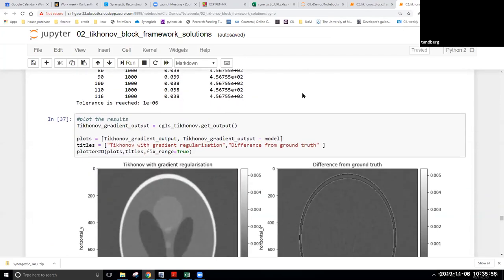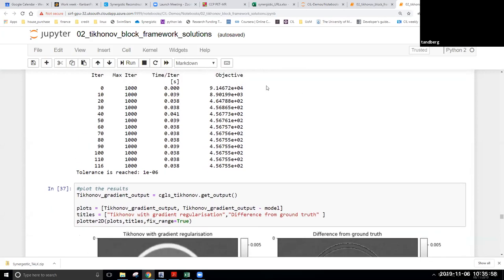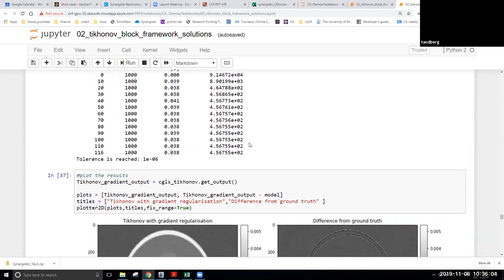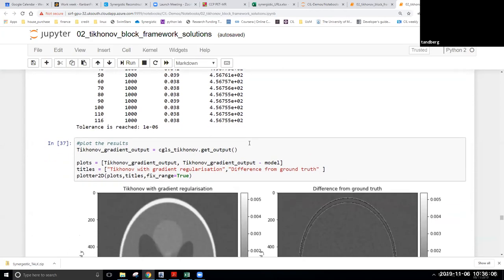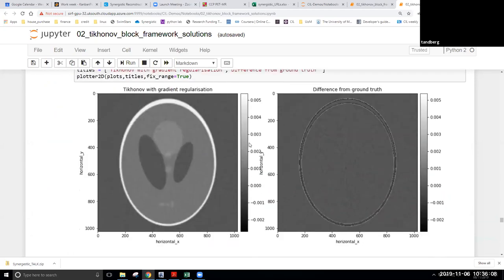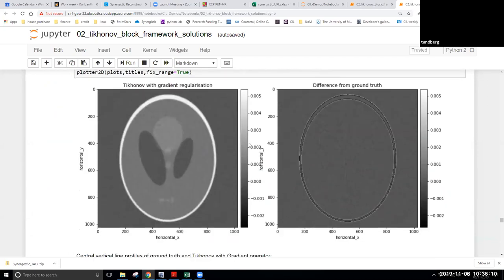And running, we see now that our objective is settling down on some value here, so hopefully that means that we have seen it converge to the solution we were after. And again, depending on the regularization parameter you've picked, you will see some trade-off between getting rid of the noise, but preserving enough details.